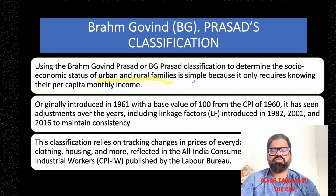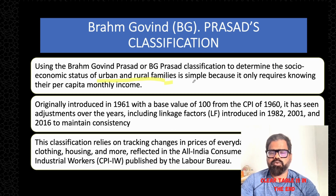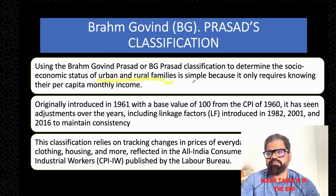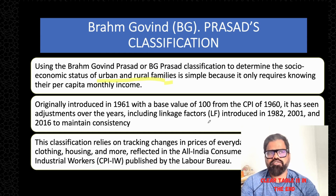Per capita monthly income is calculated as: suppose we have a family of five members and the total family income is 20,000, then per capita monthly income equals total monthly income divided by total number of family members. So 20,000 divided by 5 gives a per capita income of 4,000. It was introduced in 1961 and at that time the base value was kept as 100, depending upon the Consumer Price Index.